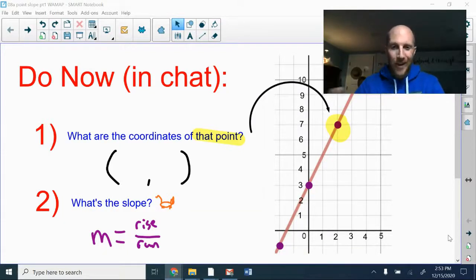So here's the do now. We're going to find the coordinates of that point highlighted in yellow along with the slope between any two points along this line. Hit pause so you got your answers, and then you can resume play and check what you got.